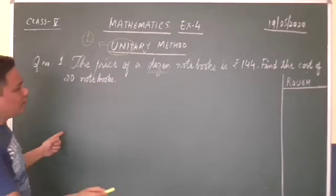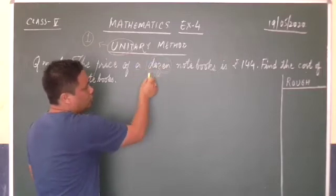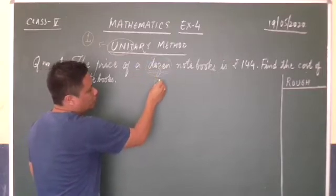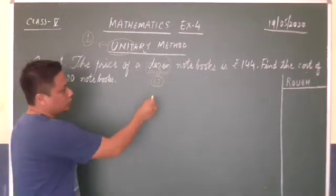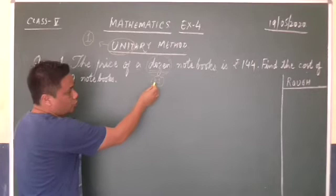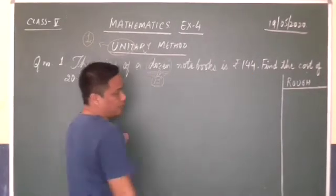So you are given here a dozen, a dozen. The meaning of dozen is 12. In one dozen, there is 12. So the cost of 12 notebooks all together is 144 rupees.